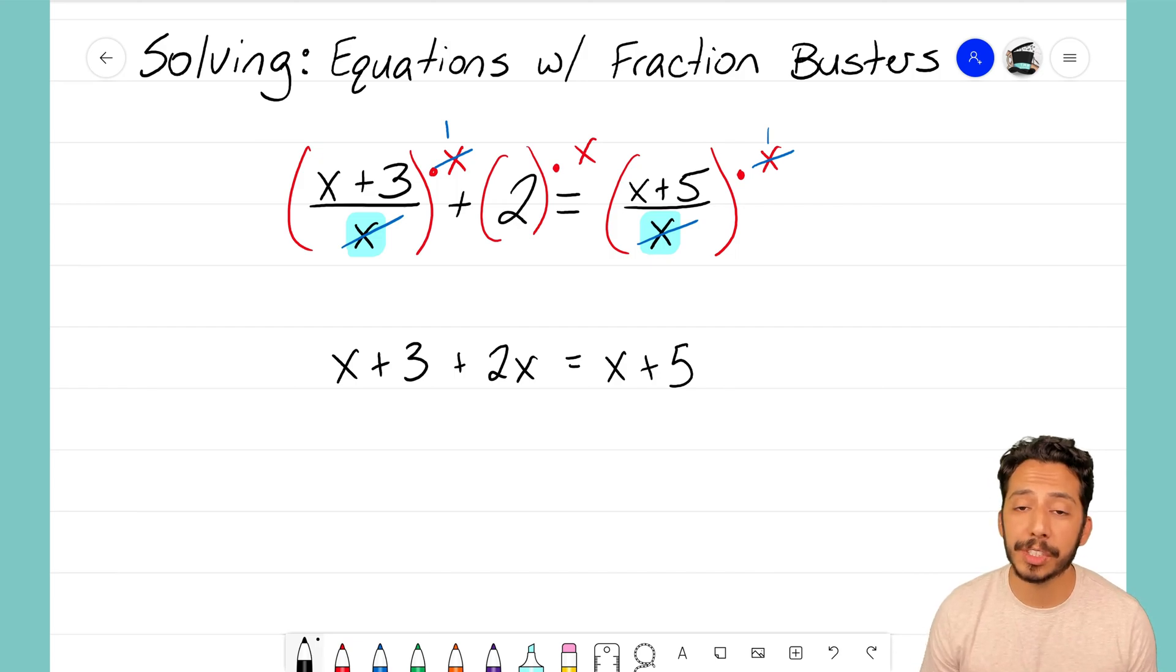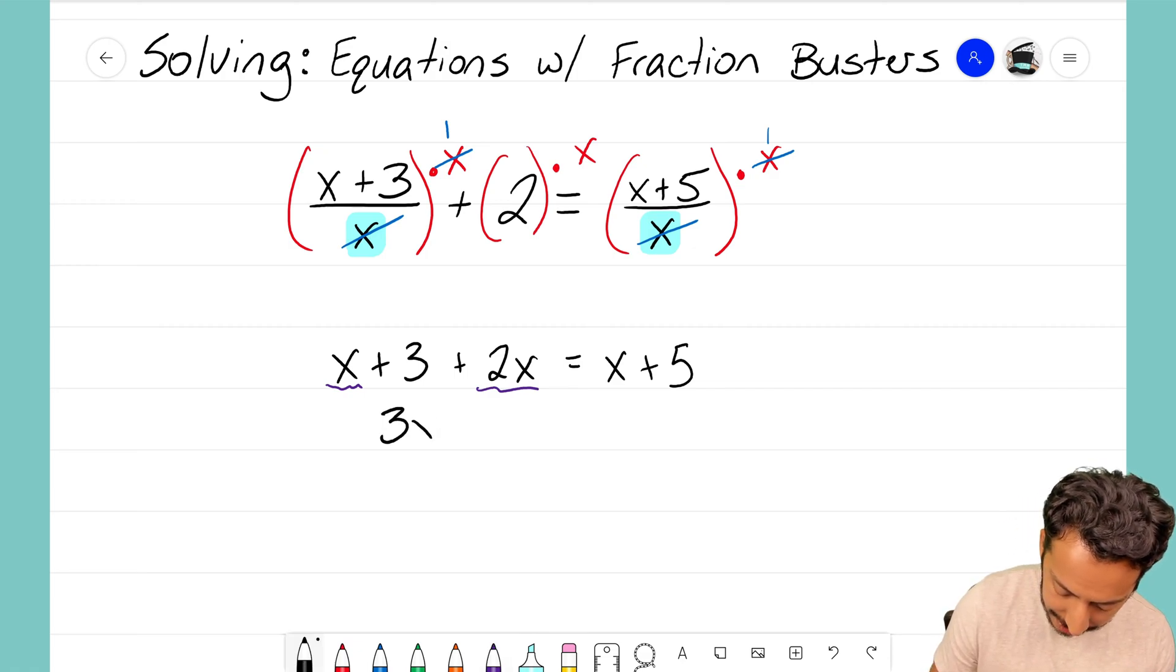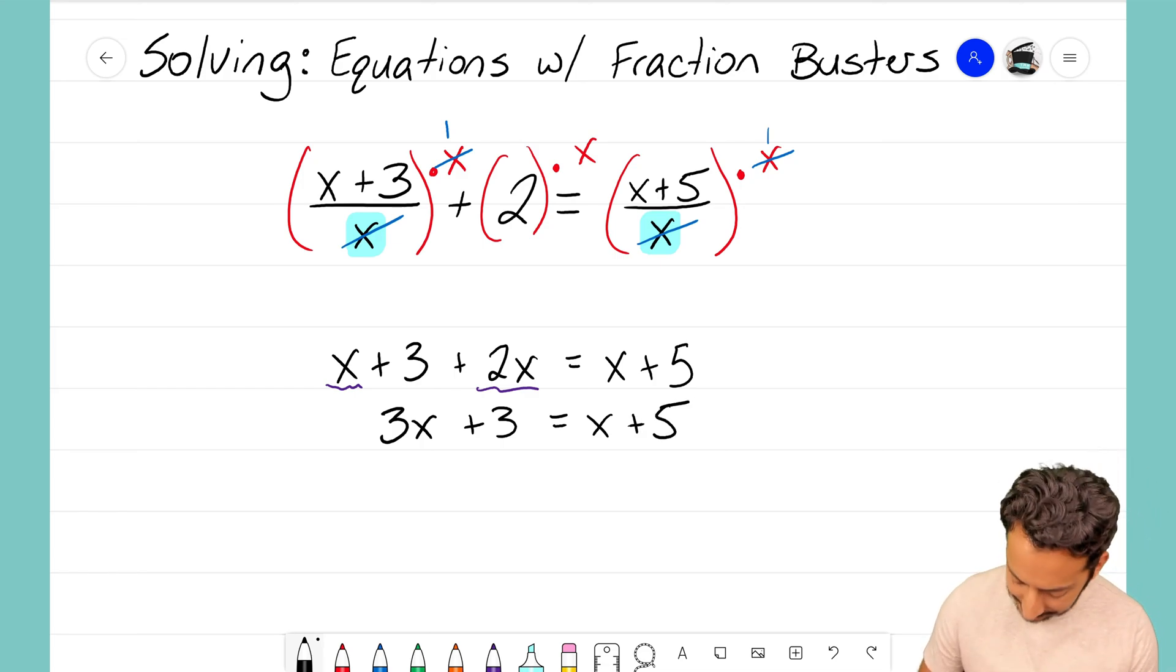An equation that I think we can now use to solve for x. Let's go ahead and work through this. On the left hand side I think I want to combine some like terms. I see that I have x + 2x that will combine into 3x, still have the +3, it still equals x + 5.